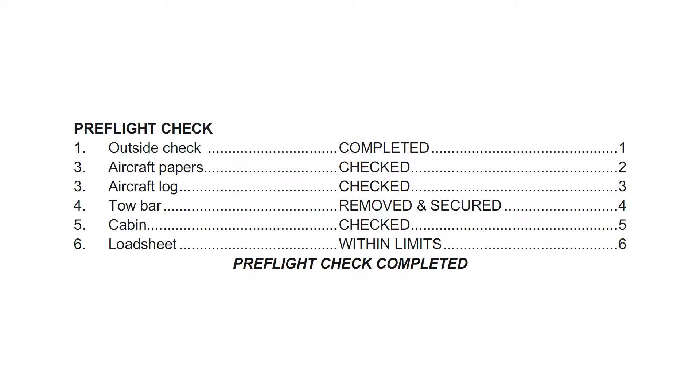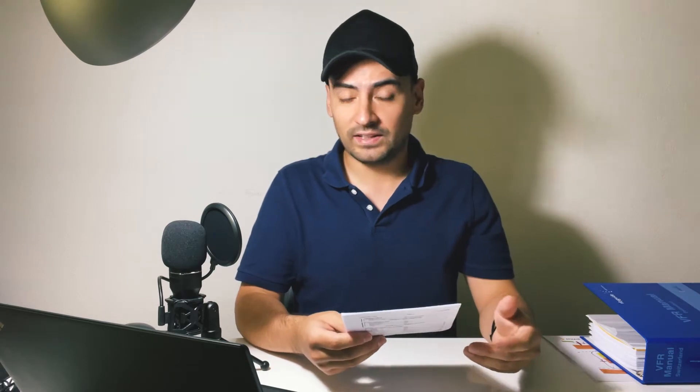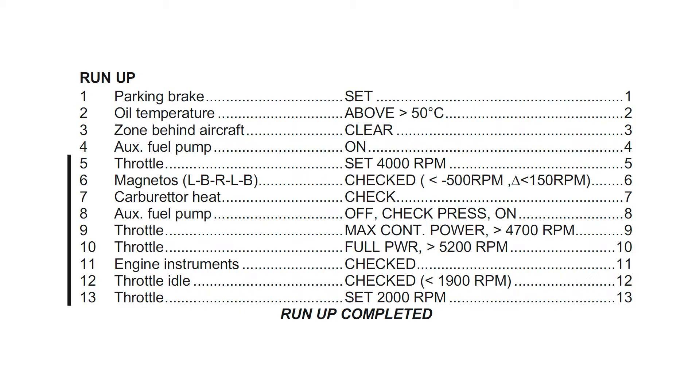Some of the checks that every checklist is likely to include, regardless of the aircraft, are: before takeoff, the pre-flight check, where one checks the outside of the aircraft and makes sure to have all the documents needed for the flight; the checks to perform before, during, and after you start the engine; the taxi check, where you make sure that the brakes and the flight instruments work properly; and the run-up, where you do one last test of the engine or engines in order to diagnose any problems before you take off.